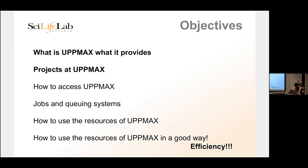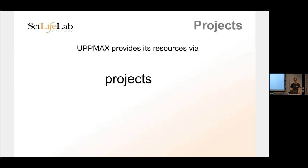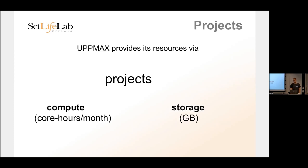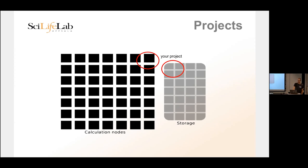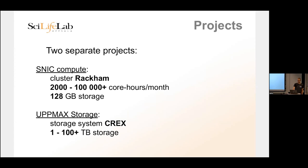So, projects at UPPMAX. You're all members of the course project SNIC 2022-22769. But what if you want to get your own project? After this course, if you want to analyze your own data, you have to get a project first, since projects are the only thing that have resources at UPPMAX. Users don't have resources — only projects do. The two resources are core hours and storage, measured in gigabytes. For some reason they decided to have two separate projects: one for storage and one for calculations. Five years ago you had one single project covering both.